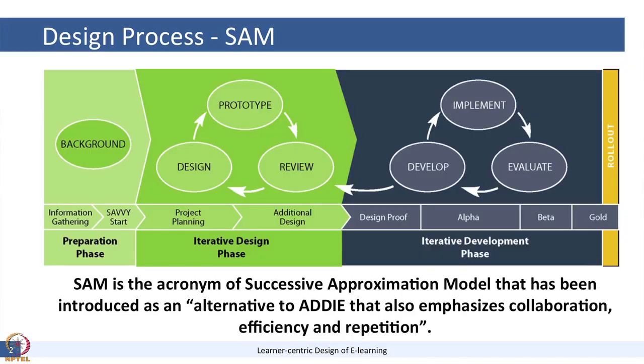Moving on to the design process — what is the design process followed in industry when creating e-learning content? Basically, if you see how e-learning products get developed in industry, we generally try to follow an agile model. By agile, I mean something that is iterative, works in short cycles, and fast. We use a Successive Approximation Model, referred to as SAM.